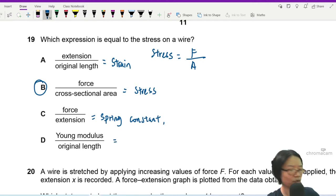Okay, Young modulus over original length. In case you don't know, Young modulus - this is just for revision purposes - the symbol for Young modulus in your syllabus is E. I don't know why, but they use E. It's the ratio of stress over strain.